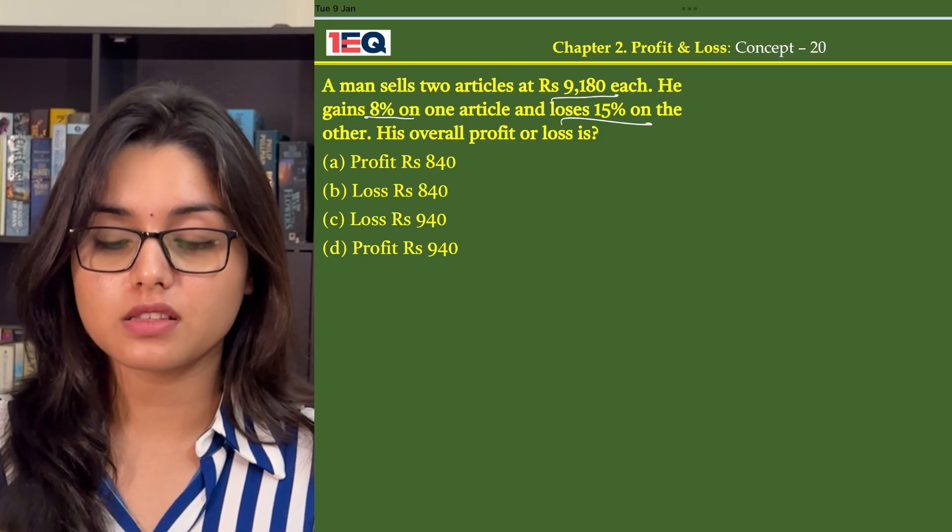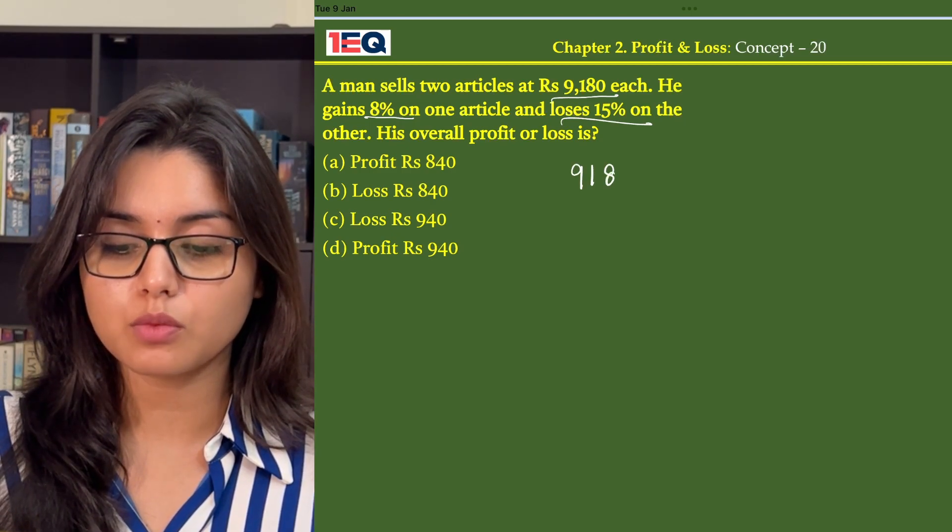So in this question, a man sells 2 articles at the same price, i.e., 9180.